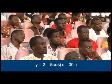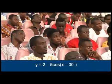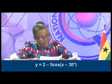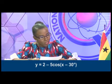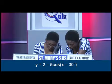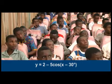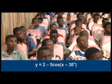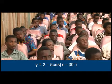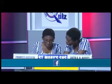Question 7: Y is equal to 2 minus 5 multiplied by cosine of X minus 30 degrees. Yes, Elom? 2 plus 5 root 3 over 2. That's incorrect.